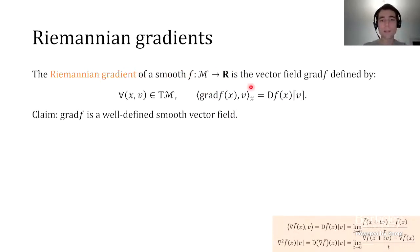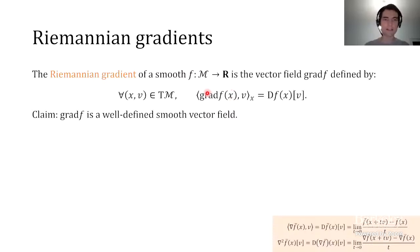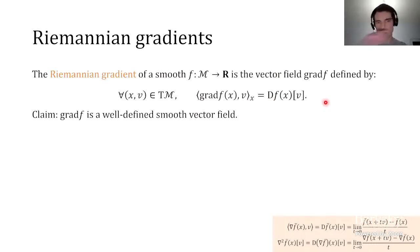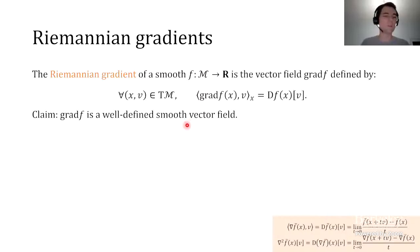On manifolds, it's going to be the same thing. If I have a smooth function f on a manifold, its Riemannian gradient is going to be a vector field, written grad f, defined as follows: grad f(x) is a tangent vector at x, uniquely defined by the property that if I take its inner product with any vector v in the tangent space at x, I get the directional derivative of f at x along v. So grad f(x) is the Riesz representative of the differential of f. I claim this is a well-defined smooth vector field—if you have a smooth function, this gradient is a smooth vector field.